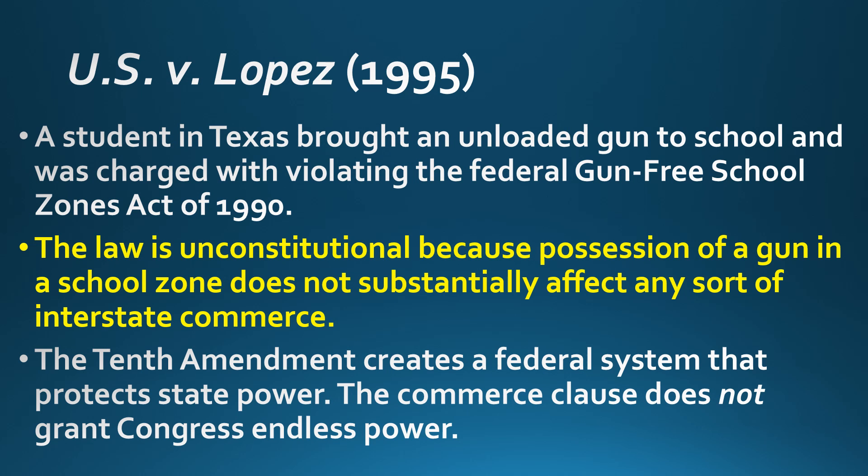Our other federalism case is U.S. versus Lopez, nearly 200 years later. A student was arrested for bringing an unloaded gun to school and was charged with breaking a federal law. Congress claimed the Commerce Clause gave them the power to pass that law, and for about 50 or 60 years, anytime they claimed Commerce Clause powers, the Supreme Court upheld it. In this case, the Supreme Court ruled the law unconstitutional because possessing a gun at school does not substantially affect interstate commerce.